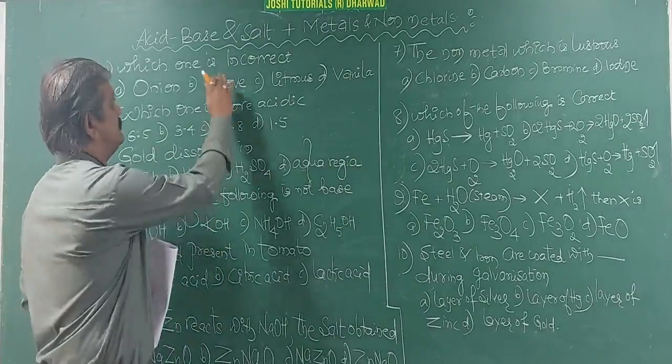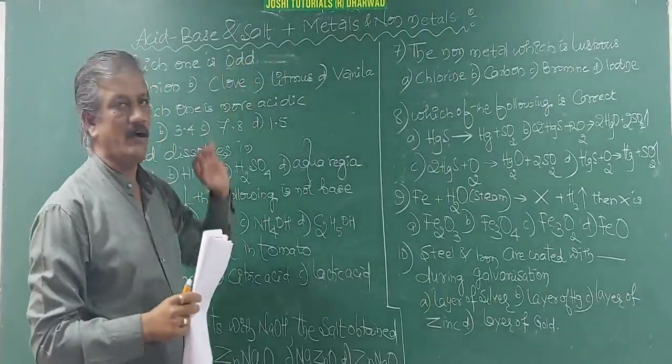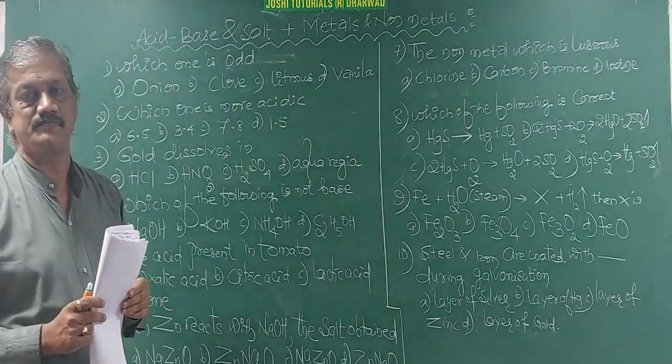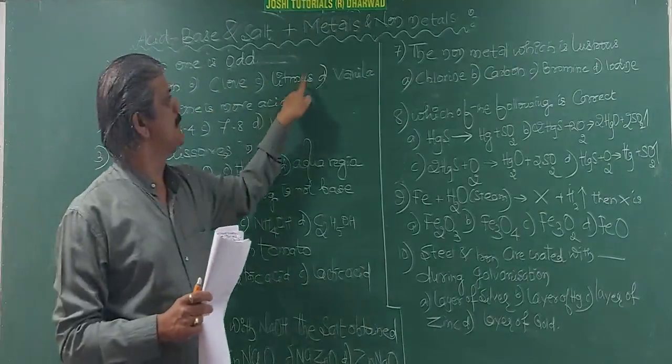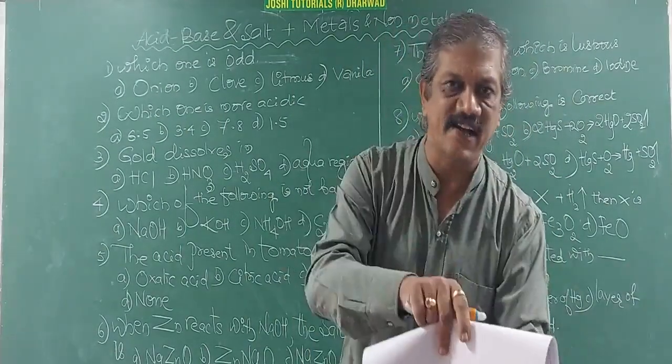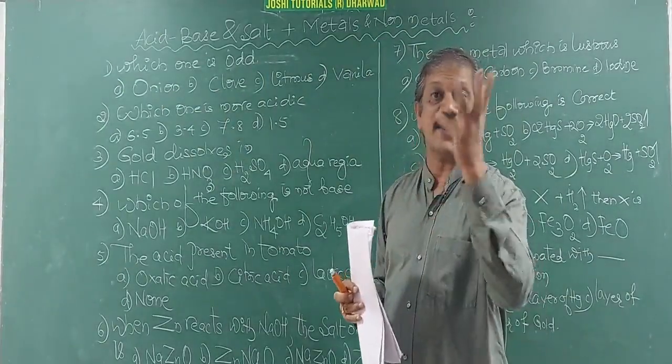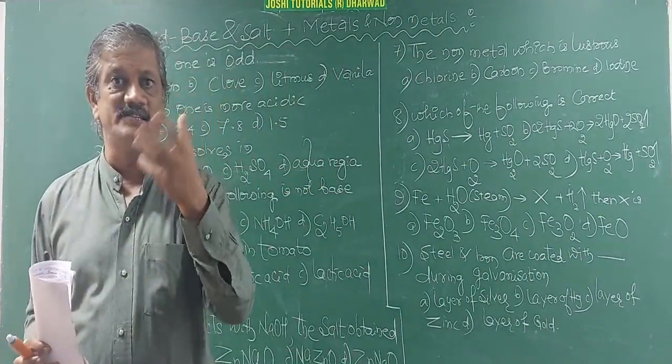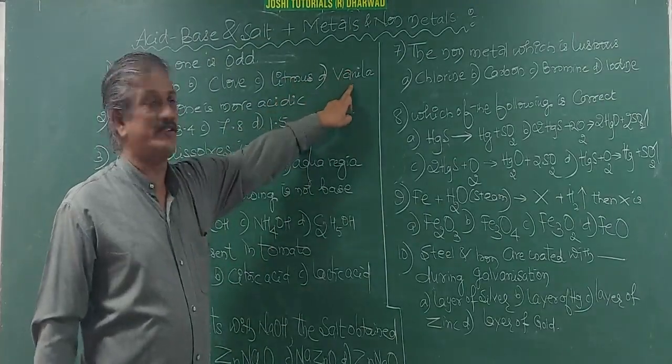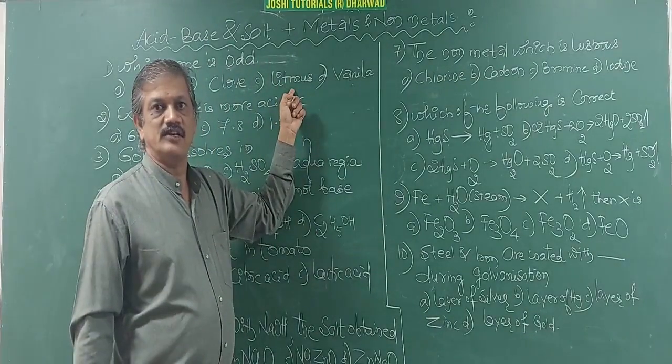Which one is odd? Instead of incorrect, you can say odd. Odd means out of four, one is not going to match. This is a very tricky question. Onion, clove, litmus, vanilla. All of these are indicators. They tell you whether given solution is acidic or base. Odd means here: onion, clove, vanilla, these are olfactory indicators. Olfactory means by smell, their odor changes. But here, litmus, color changes. You can see the color, but you cannot see the odor. So all of these three belong to same group and this is not. That's why it is odd.